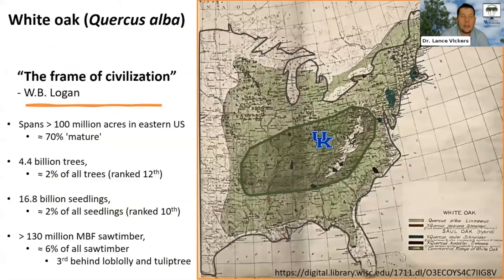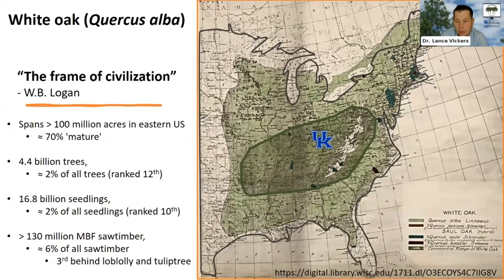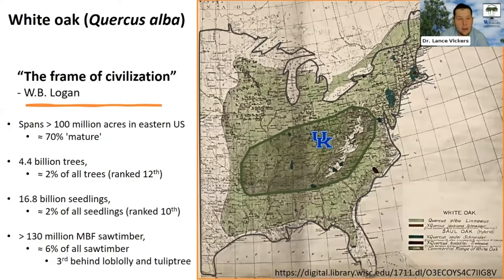White Oak is an incredibly important resource. It spans a huge range, basically all of the eastern U.S. This map here from the 1920s shows that there's a commercial range within that range — the darker green band is where the commercial range is. And here at the University of Kentucky, we're really in the heart of that commercial range.